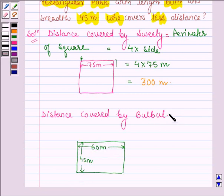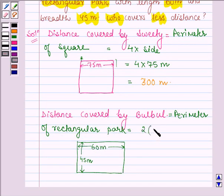So, distance covered by Bulbul is equal to the perimeter of the rectangular park. It is equal to the sum of its length, breadth plus length and breadth. That is 2 times of L plus B, where L is the length of the park and B is the breadth of the park.